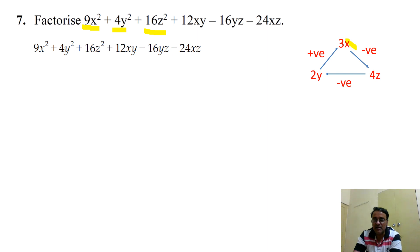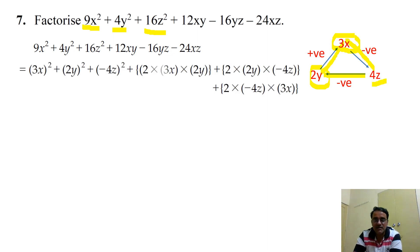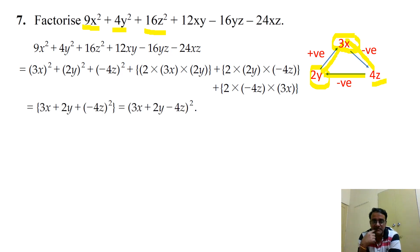We analyse the cross-product signs: the product of 3x and 2y is positive (+12xy ✓), the product of 2y and 4z is negative (-16yz ✓), and the product of 3x and 4z is negative (-24xz ✓). This is consistent when 3x and 2y are positive and 4z is negative. So the answer is (3x + 2y - 4z)².